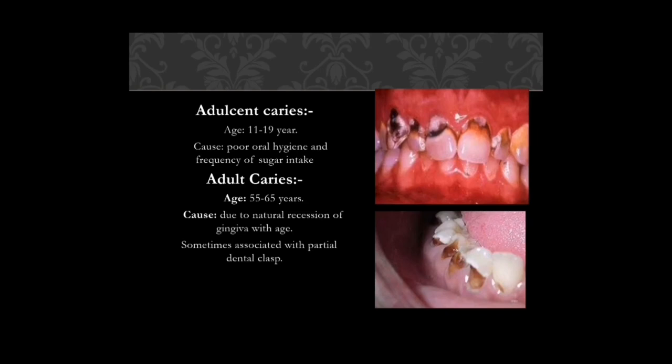Adolescent caries occur at ages 11 to 19 years, caused by poor oral hygiene and frequent sugar intake. Adult caries occur at ages 55 to 65 years, caused by naturalization of the gingiva with age, sometimes associated with a partial denture clasp. If the partial denture clasp irritates the gingiva, gingival recession takes place, the root surface is exposed, and the chances of root caries are high.